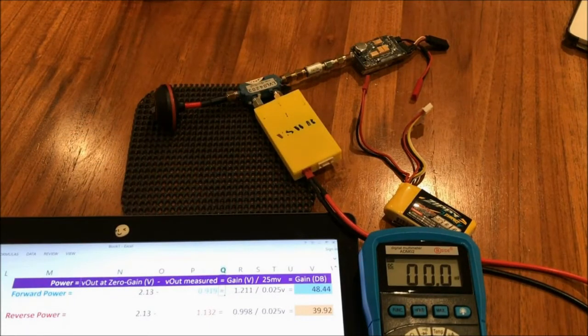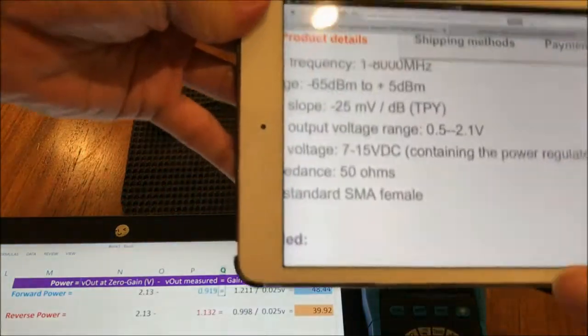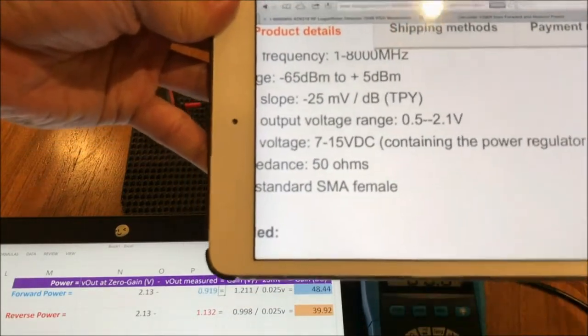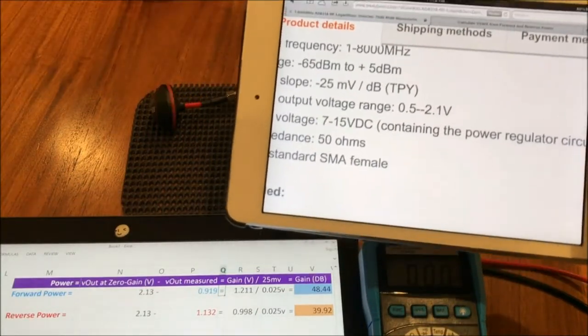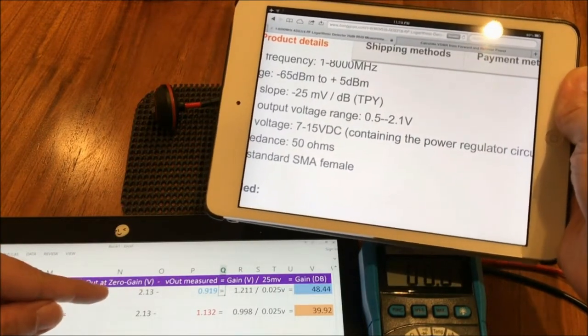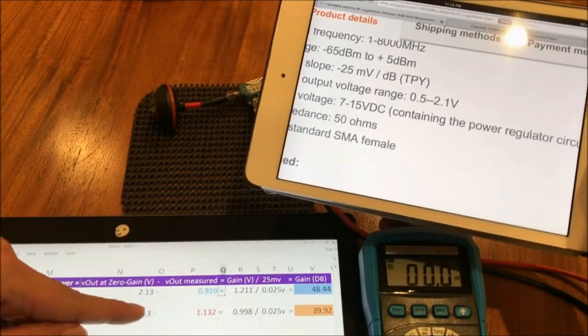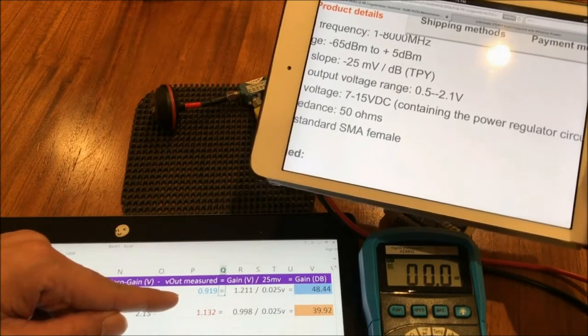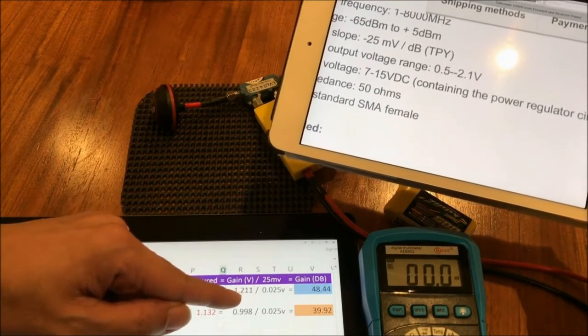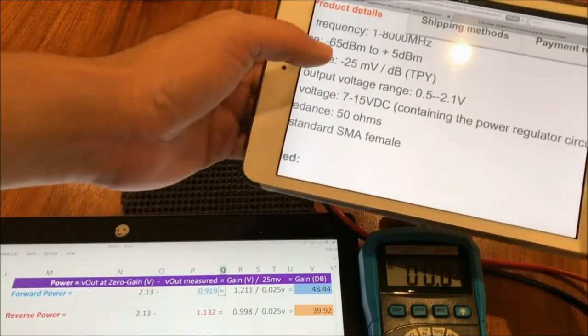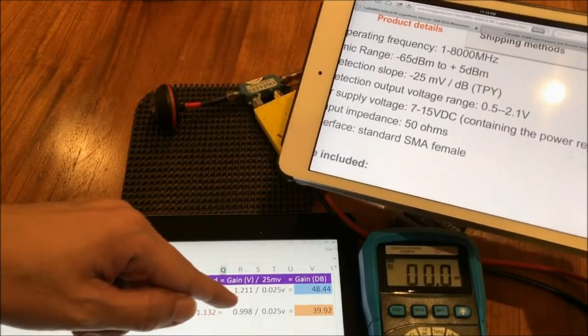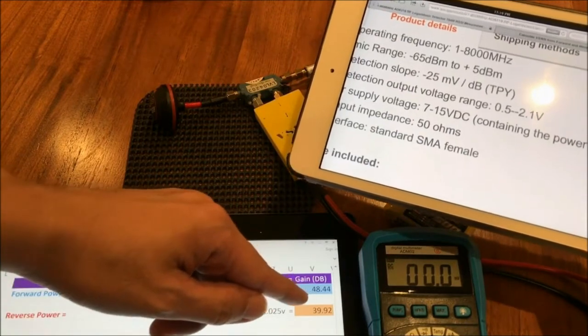Okay, if you remember, the range of this RF meter is 0.5 to 2.1 volts or 2.13 in our case here, according to the voltmeter. So to arrive at the forward and reverse power in gain measurement, we need to take 2.13, which is the 0 gain, and minus the reading that we've got here. And that will give us the delta, which is the actual gain in voltage. And we're going to take that voltage and divide by 0.025, because this RF meter is scaled at 25 millivolts per dB. So if we divide the voltage by 0.025, we get the actual gain in dB.